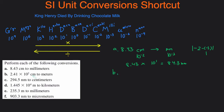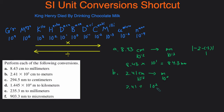For part B, we're converting 2.41 centimeters into meters. Centi is 10 to the negative 2 and meters is the base unit, so that's 10 to the 0. The absolute difference between negative 2 and 0 is 10 to the 2. Since we're going from centi to the base we're going to the left, so we divide: 2.41 divided by 10 squared is 2.41 divided by 100, which gives you 0.0241 meters.